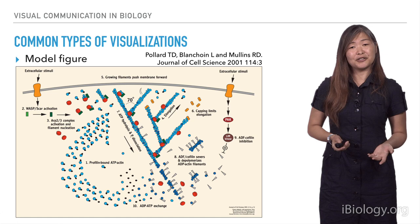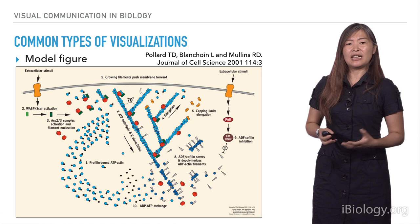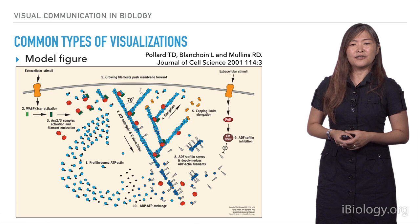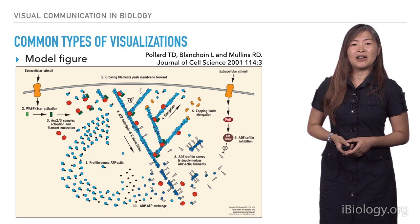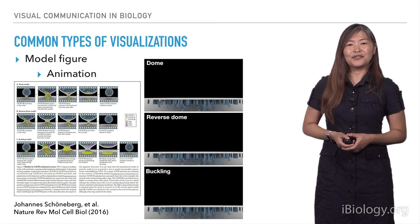Next, we have model figures. These types of figures are really where we have to get a little more artistic. We're trying to tell a story about a specific process and convey our hypotheses in visual form. This is a great example of an illustration created by Dyke Mullins to show the actin networks at the leading edge of a crawling cell. I'll be talking a lot more about how to think about these types of model figures and how to create them.